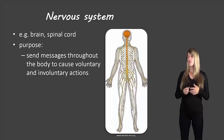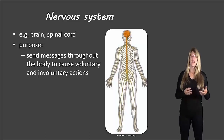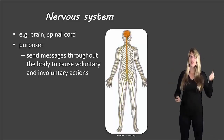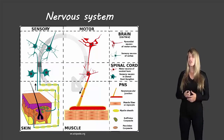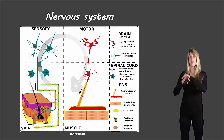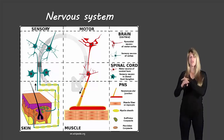The next system is the nervous system, which includes the brain and spinal cord. Its purpose is to send messages throughout the body to cause voluntary and involuntary actions. Voluntary actions are things we consciously choose, like moving our arms. Involuntary actions, like digesting food, happen automatically. For example, if you touch something prickly, sensory neurons in your skin send a message to your brain, which interprets it and sends a signal through motor neurons to your muscles to pull your hand away.